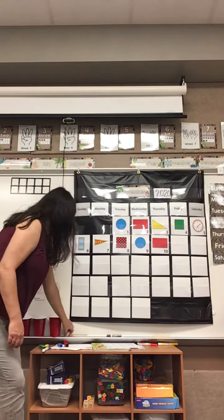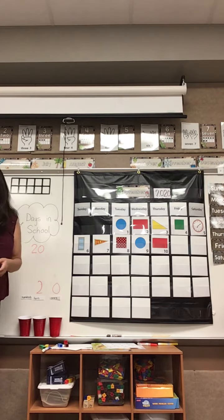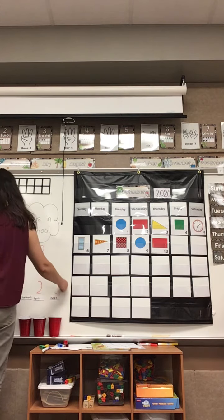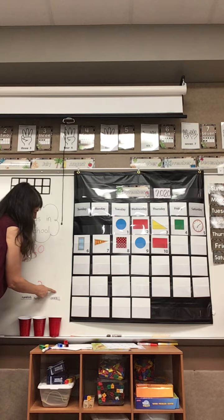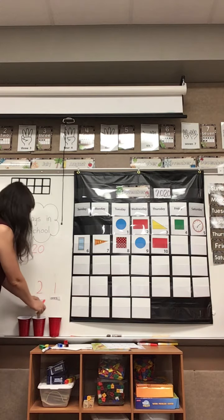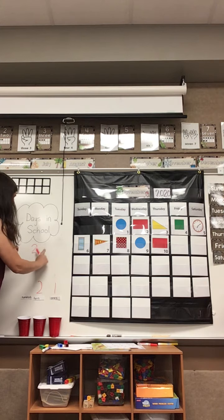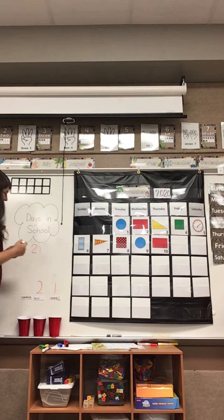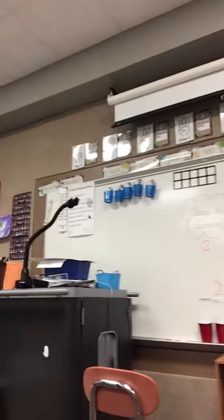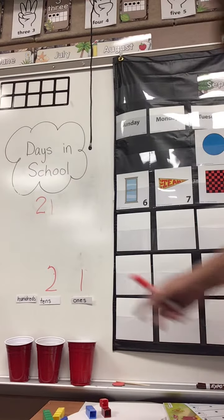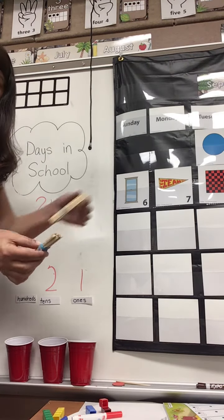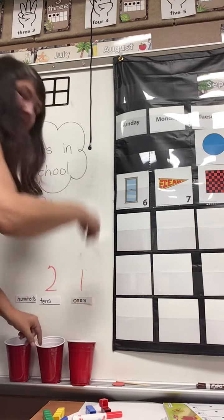I need to add a new popsicle stick into my cup for the ones. How many do I have in the ones place? I have one, so I need to change that. I still have two groups of ten — so two groups of ten and one in the ones place makes twenty-one days. We've been in school for twenty-one days. I'm going to move this closer so you can actually see what I've written on there. We have two groups of ten and one in the ones. We would count that by counting by tens: ten, twenty, and then we switch to counting by ones — twenty-one.